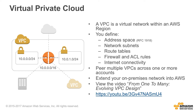A VPC is a virtual network within an AWS region. You define your address space, the network subnets, route tables, security groups or firewalls, ACL rules, and internet connectivity. You can peer or connect multiple VPCs across one or more AWS accounts, and you can extend your on-premise network into AWS. A highly recommended follow-up topic is to view the One to Many Evolving VPC Design video.